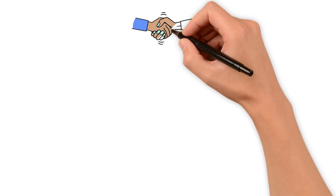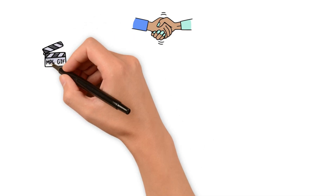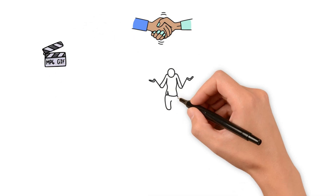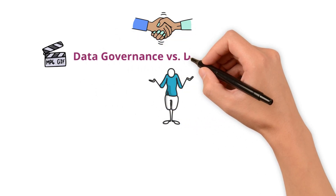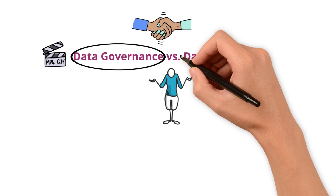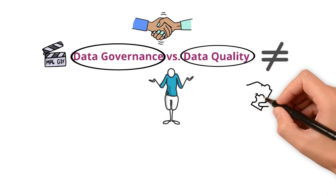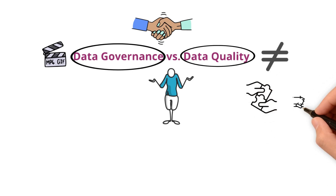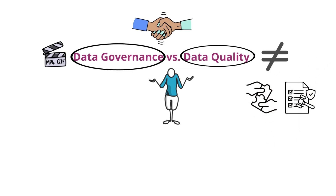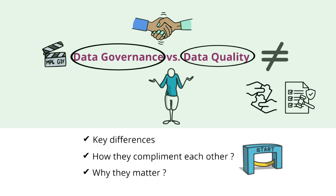Hey everyone, welcome back! In today's video we are tackling the fundamental question: what's the difference between data governance and data quality? These two terms are often used interchangeably, but they are not the same. In fact, they work together to ensure that businesses have trustworthy data. By the end of this video you'll know the key differences, how they complement each other, and why they matter. Let's begin.